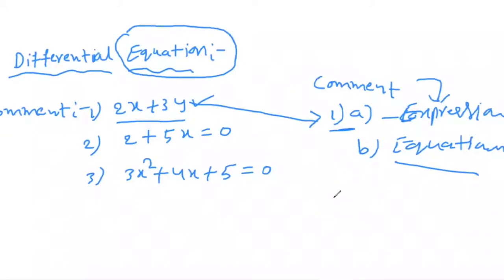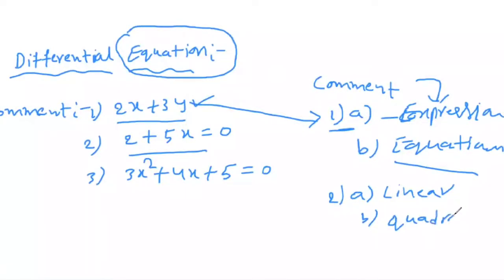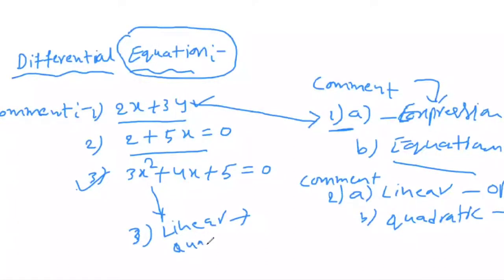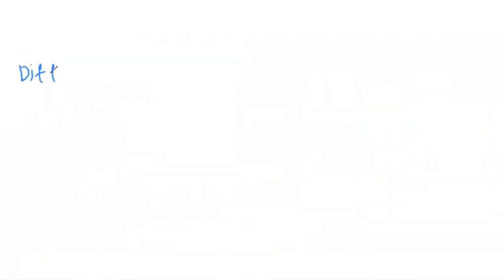For the second one, 2 + 5x — is this a linear equation or a quadratic equation? Choose the correct answer and comment below. For the third one, if you think it is quadratic, comment '3b'.